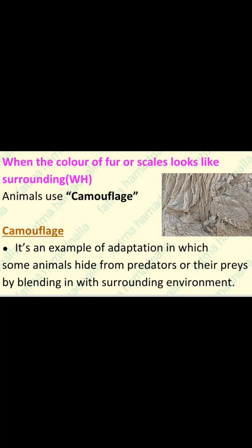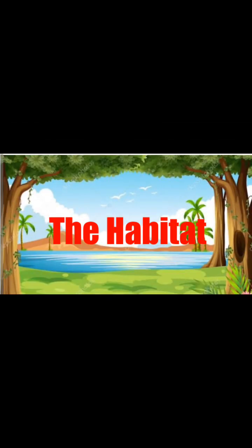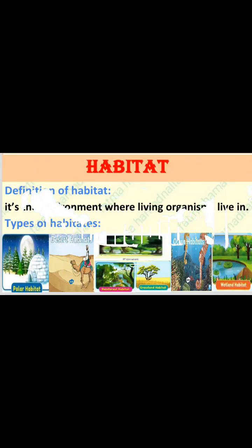In the last video, we said that animals use camouflage to protect themselves from enemies in the place they live in. That place is called a habitat. Today, we will talk about habitats. The meaning of habitat is the environment where organisms live. There are many types of habitats, such as desert habitat, polar habitat, ocean habitat, and forest habitat. We will talk about them in detail.